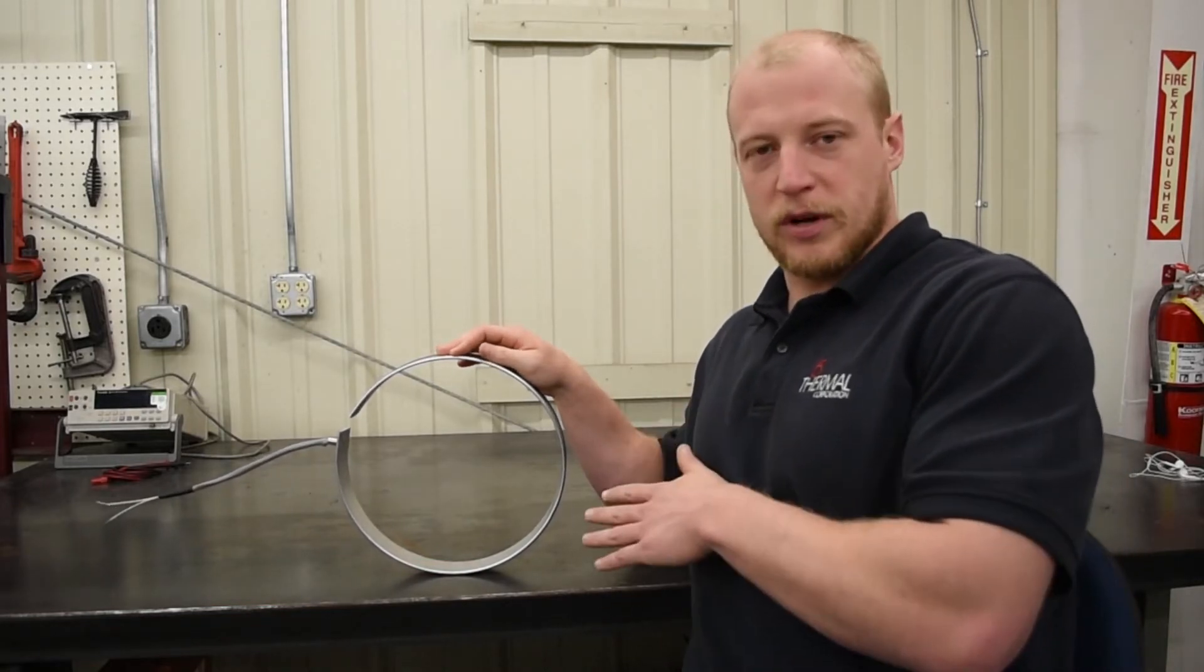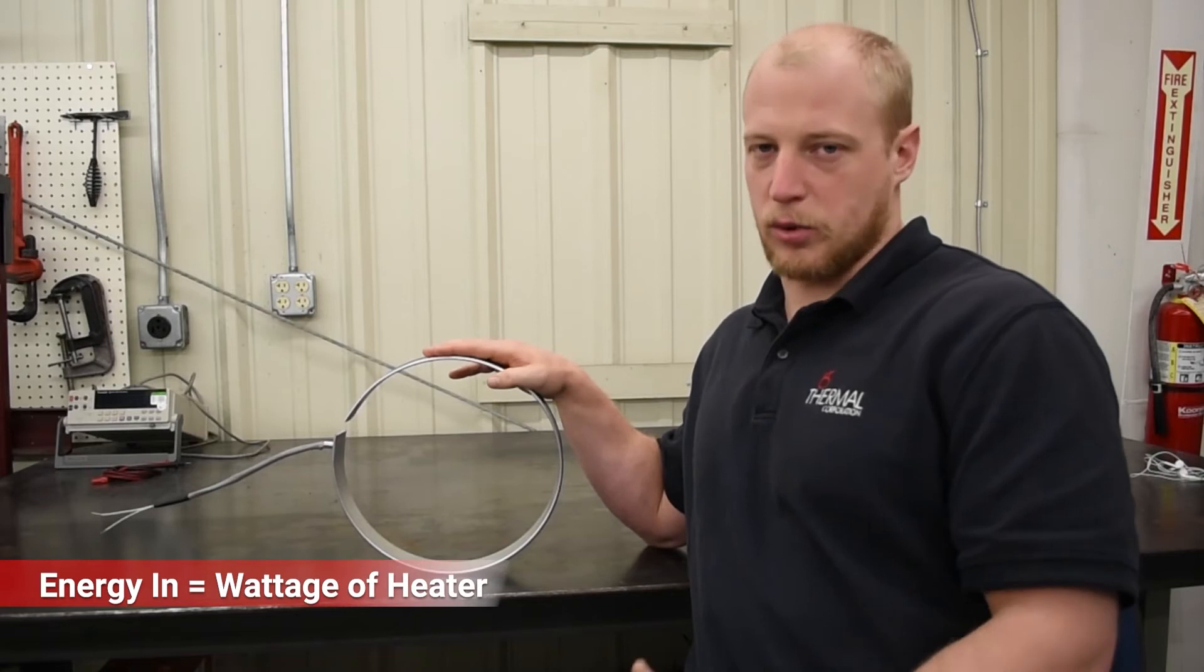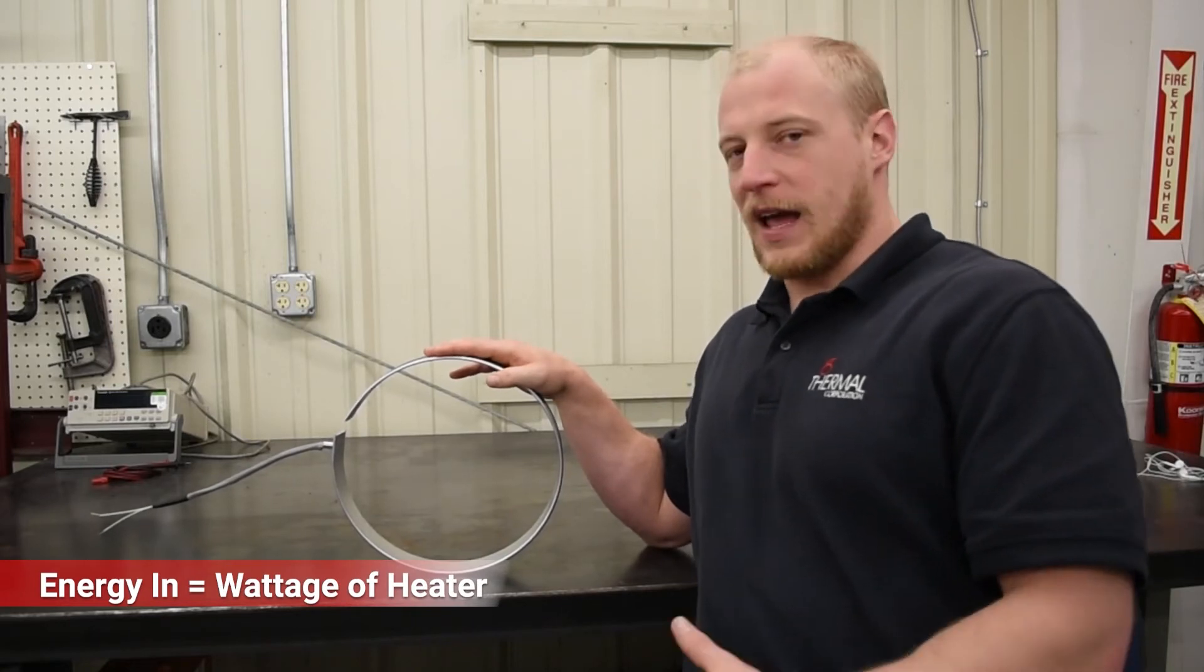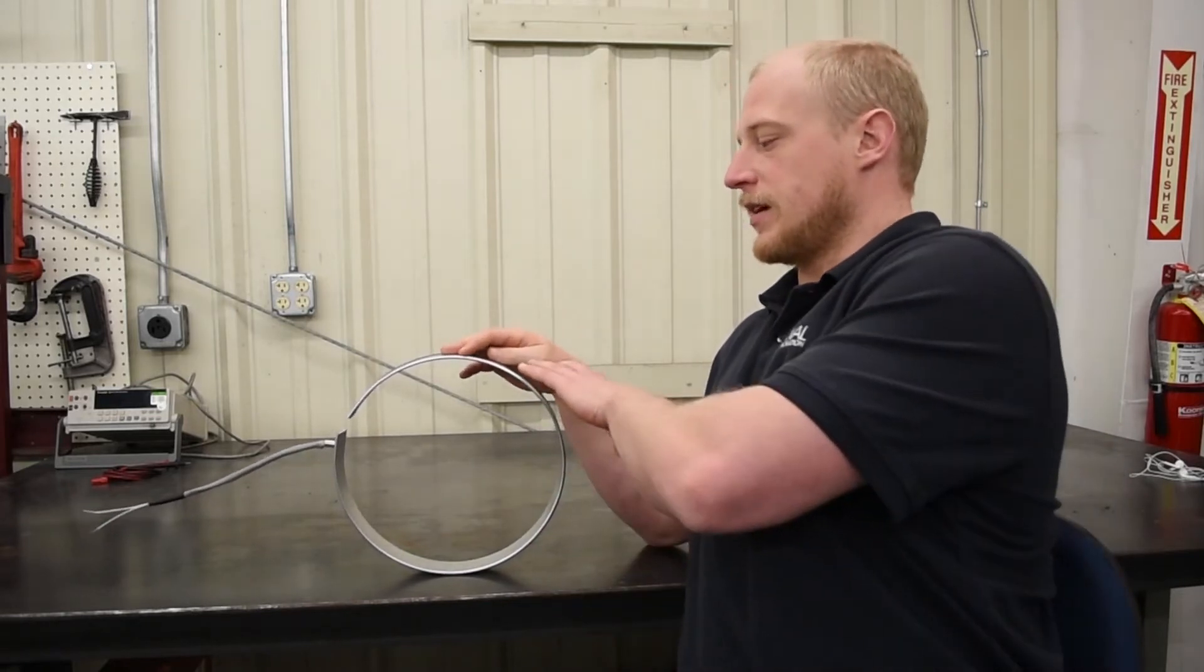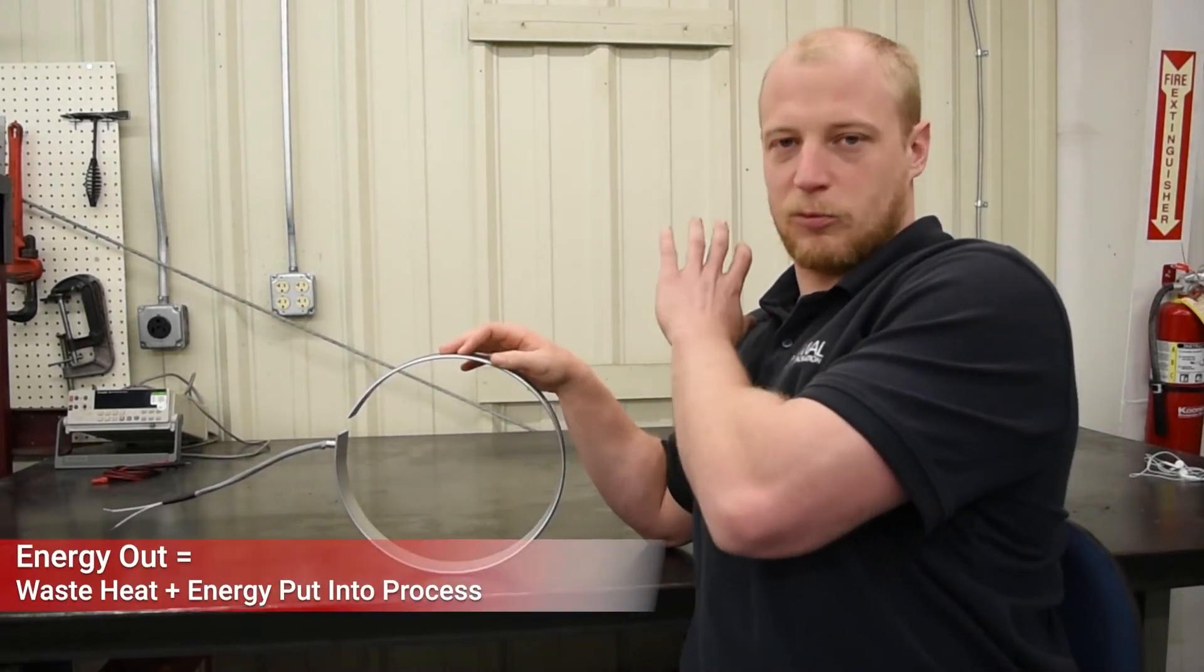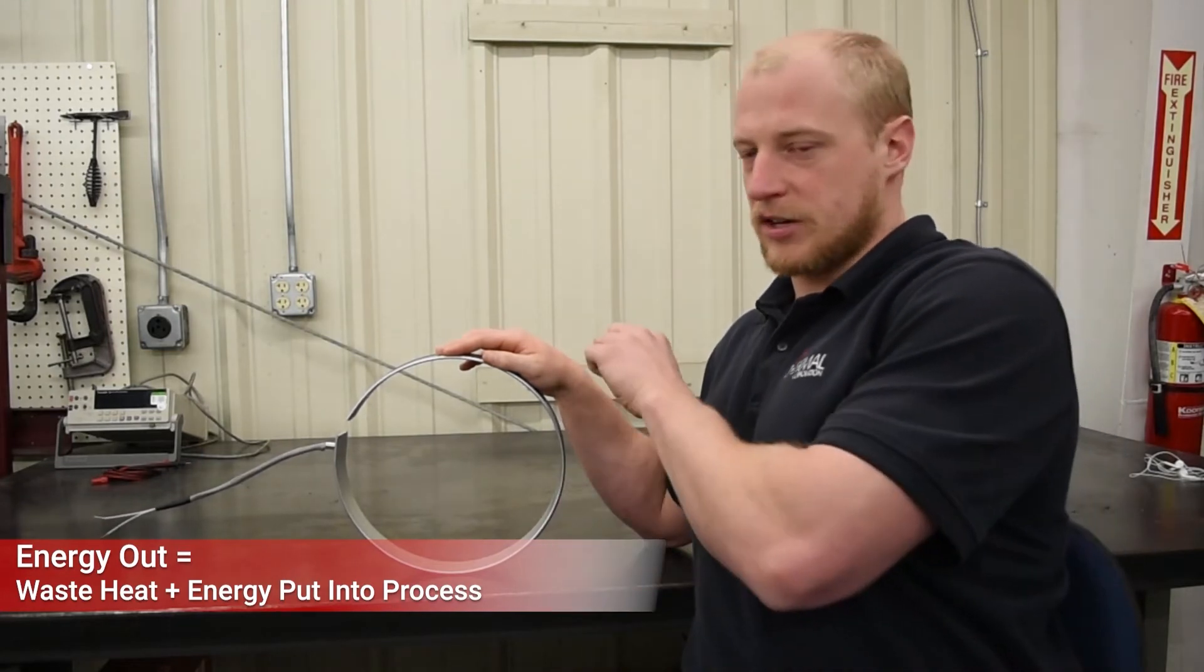The energy in being put into your system is whatever the wattage of the heater is—that's what we're trying to solve for. Energy out consists of two parts: the energy that is lost to the environment that's radiated into space, plus the energy that is actually put into the process, into the material, into whatever you're trying to do.